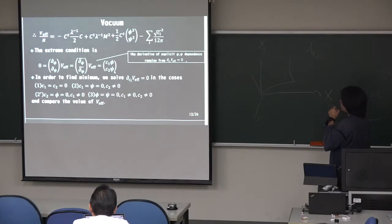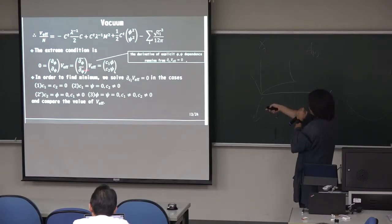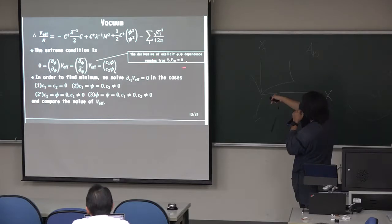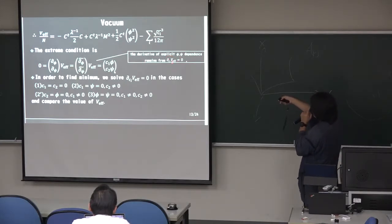Okay. And we want to know the vacuum. That is, we want to know the minimum point of this effective potential. So the effective, or the extreme condition is maybe the, we want to derivative of the fields of the effective potential. And this becomes, in fact, this becomes an explicit dependence. Yeah. The derivative of the exclusive py5 dependents remains only. Only the derivative of the exclusive py5 dependence remains pro as zc vf is equal to zero.